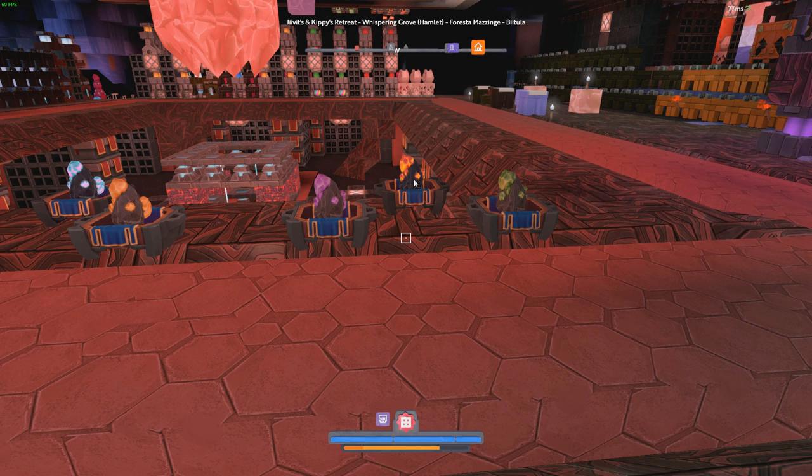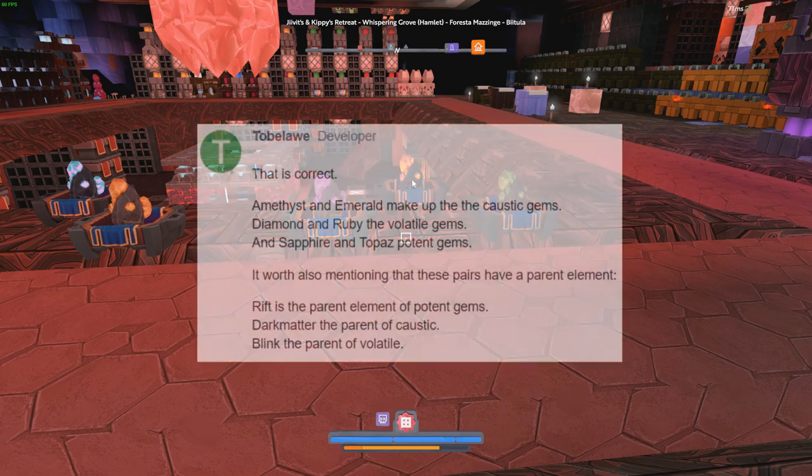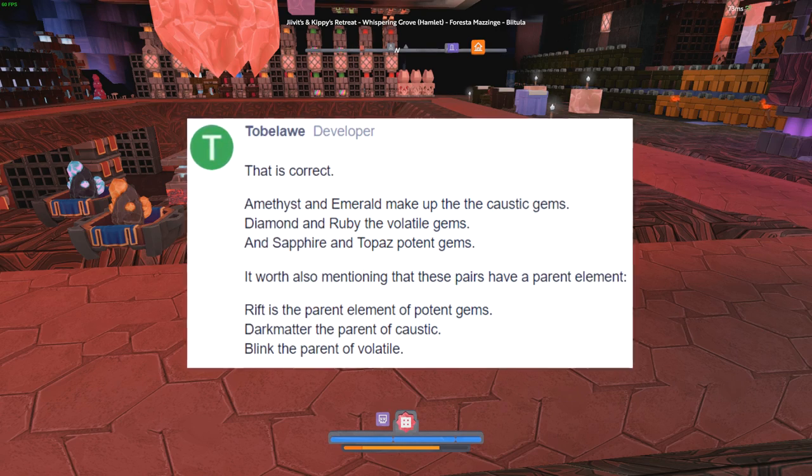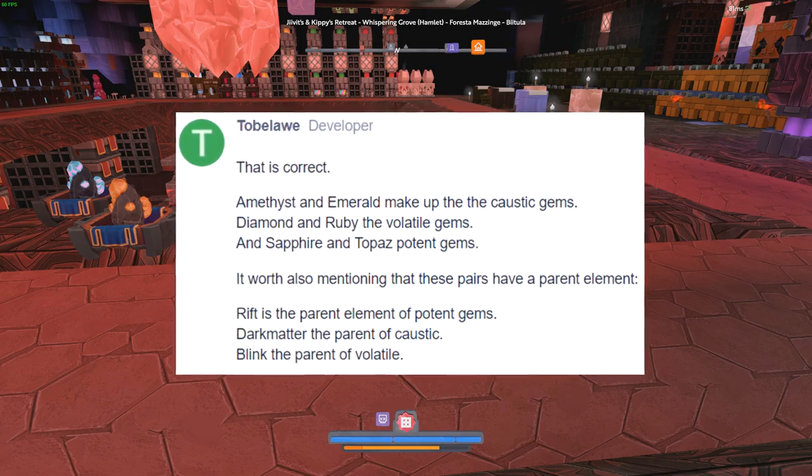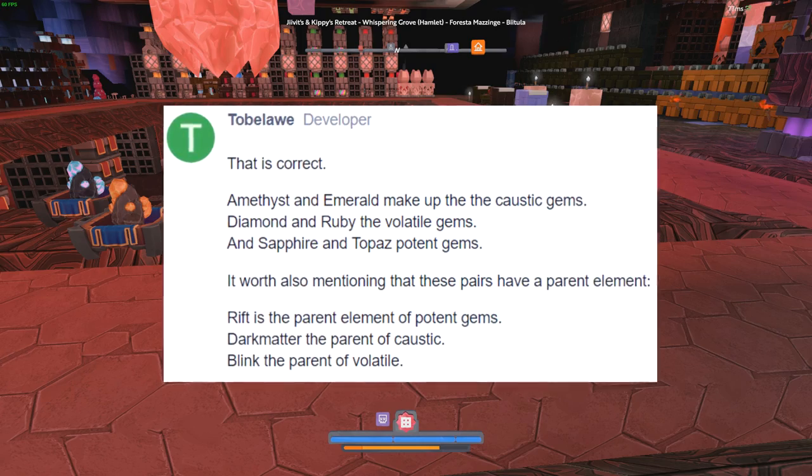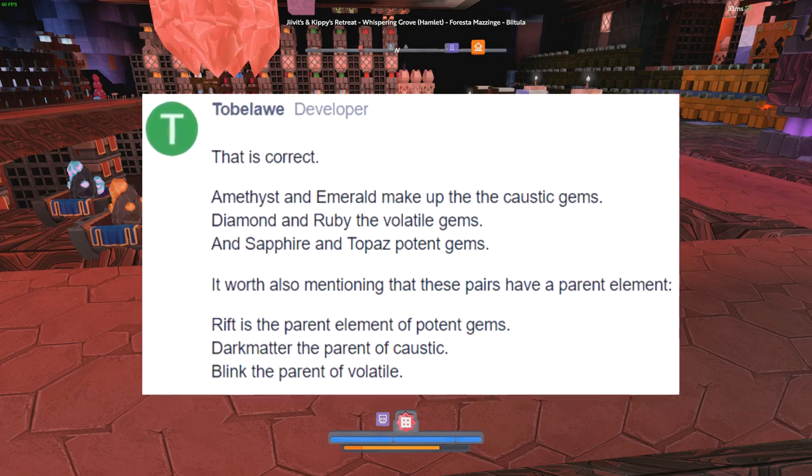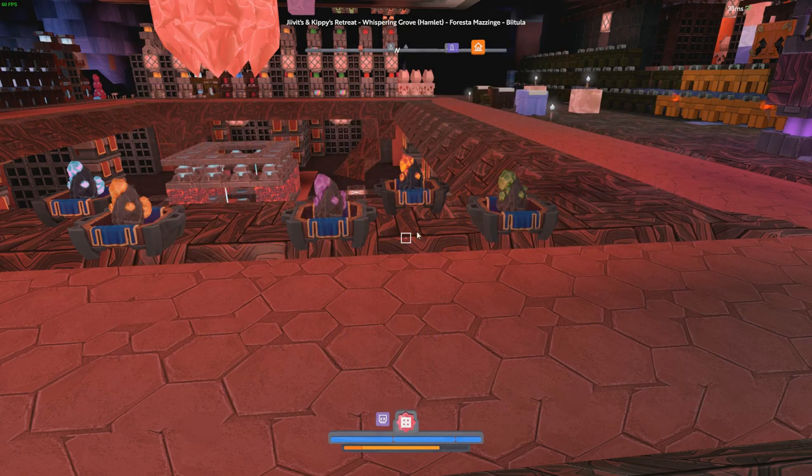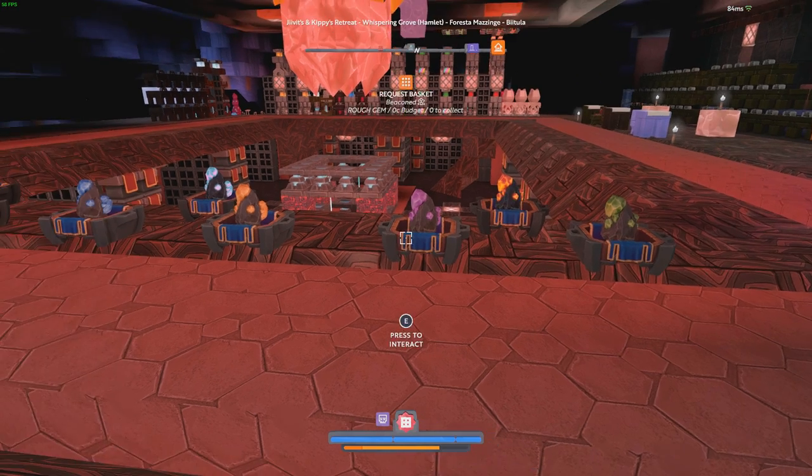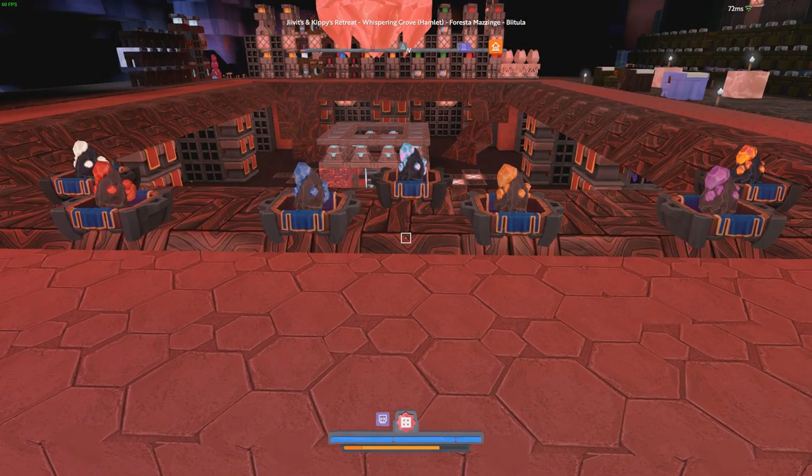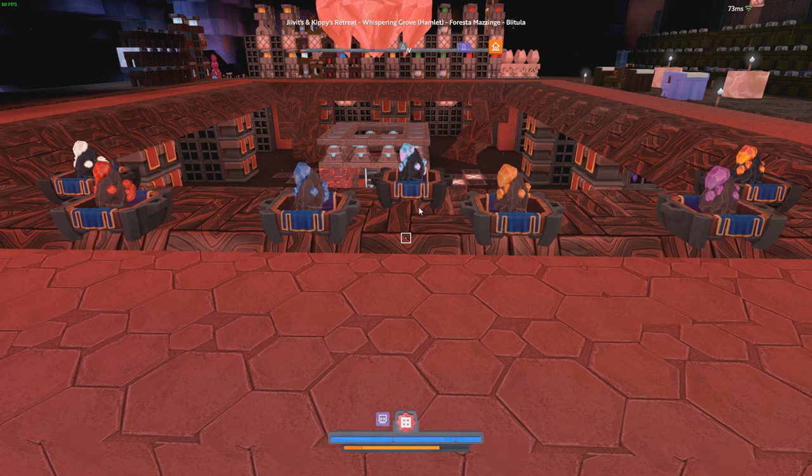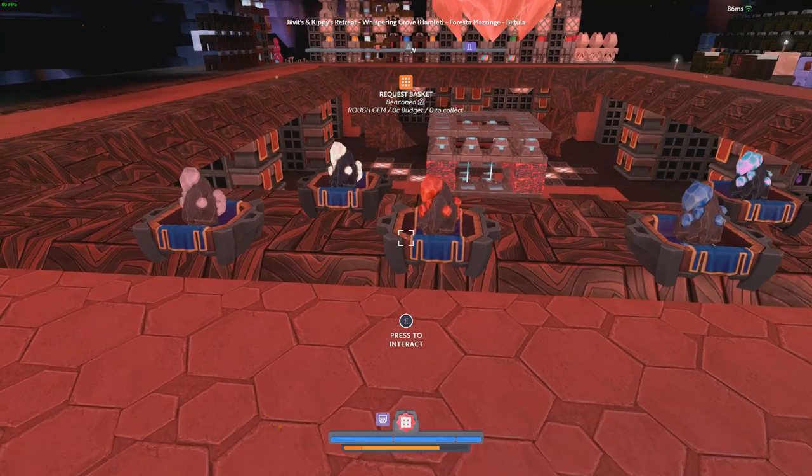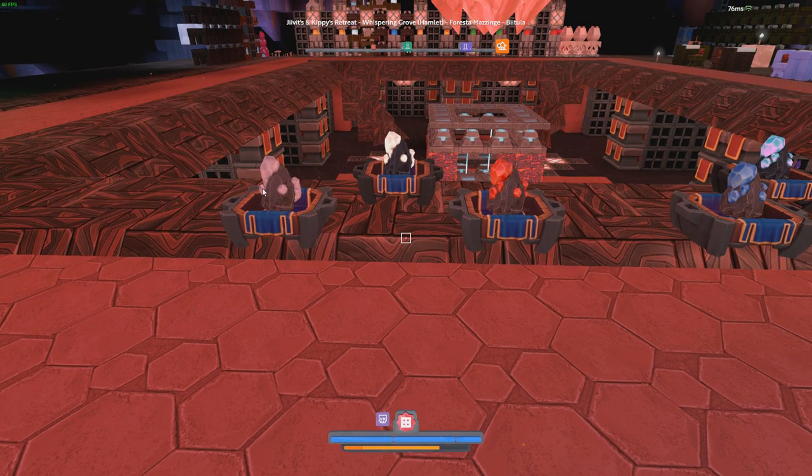There is a dev comment where each set of elements in a particular category are basically born from or have a parent element of these special elements right here. So Dark Matter gives birth to the Caustic elements. Moving over here, we have Sapphire and Topaz in the Potent category, which is parented by Rift. And then finally, for the Volatile, we have Diamond and Ruby, which is Blast and Burn, parented by Blink.